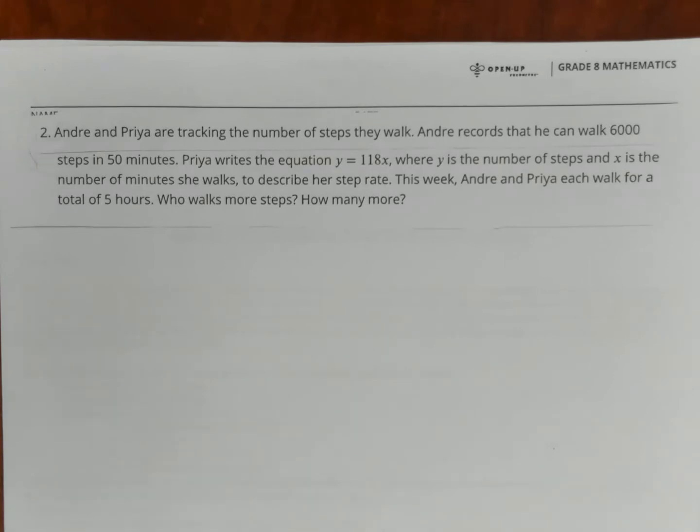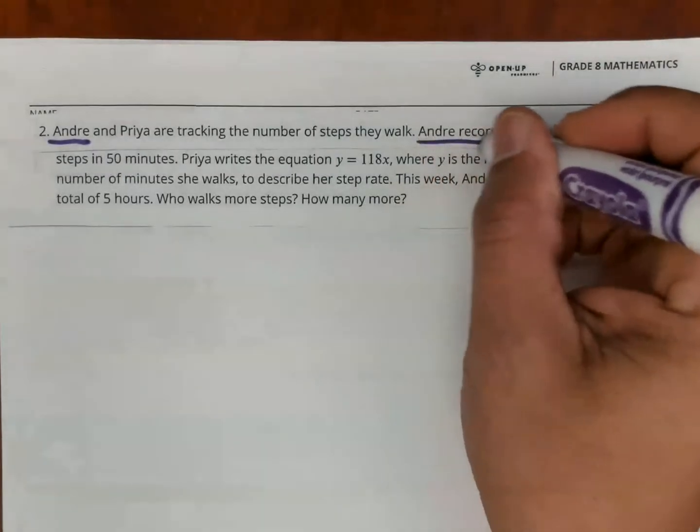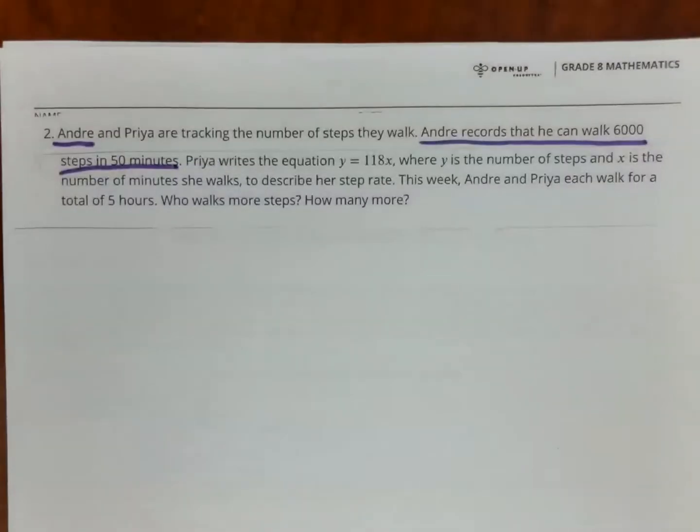In this question, in this lesson, we are comparing more than one rate. So what I'm going to do is I'm going to underline Andre's information in purple. Andre can walk 6,000 steps in 50 minutes.